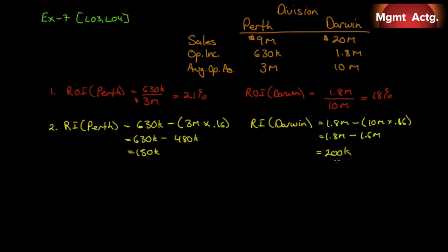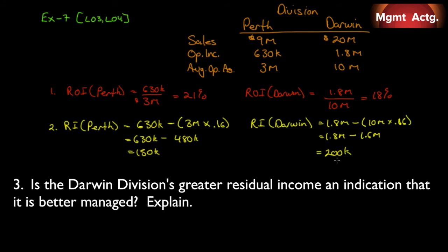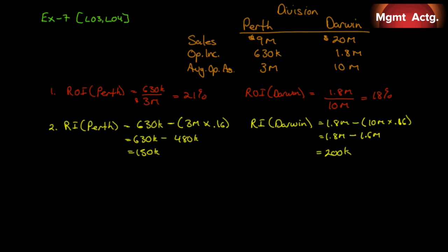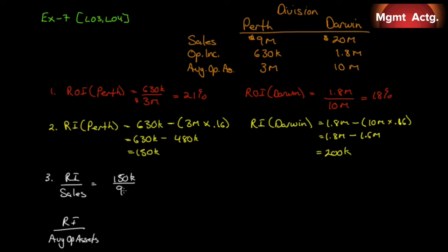So who do we believe — ROI or residual income? Number three asks whether Darwin's greater residual income is an indication that it is better managed. We can express residual income as a ratio to sales (a residual income margin) and as a ratio to average operating assets. For Perth: $150,000 ÷ $9,000,000 in sales = 1.67% residual income margin, and $150,000 ÷ $3,000,000 in assets = 5%.